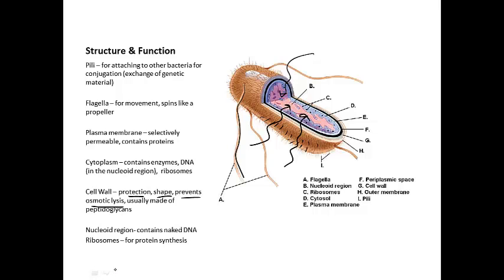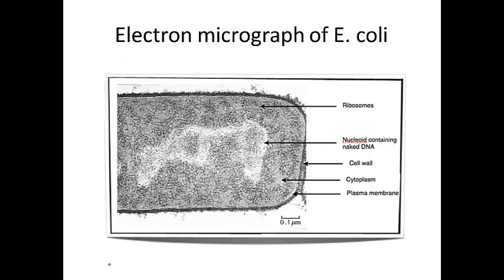There's the nucleoid region, which contains the naked DNA. It's called 'naked' because it has no proteins attached to it and there are no chromosomes. Chromosomes are DNA combined with protein, and that's what we have in our nuclei — prokaryotes don't. And ribosomes are present for protein synthesis. You are responsible for recognizing organelles in an electron micrograph of E. coli.